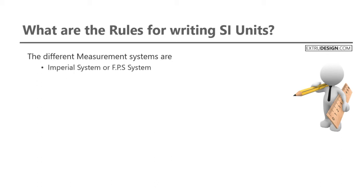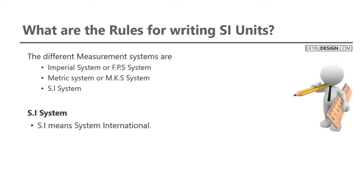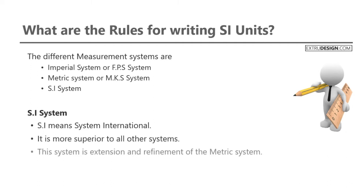The first measurement system is also known as the FPS system. The second one is the metric system, also known as the MKS system. And the third one is the SI system. SI means System International, and it is more superior to all other measurement systems.